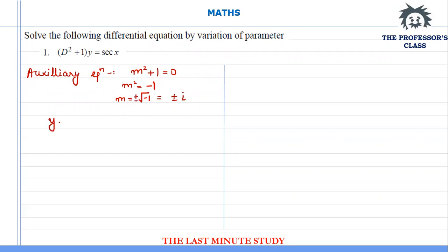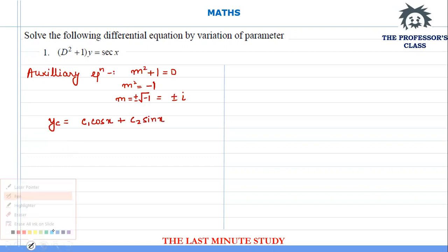Since the value of m is an imaginary number with no real part, the solution will be given as e raised to the power 0x, which is 1. We get c1·cos(x) plus c2·sin(x). For the variation of parameters I'll use these two components, letting them be y1 and y2.